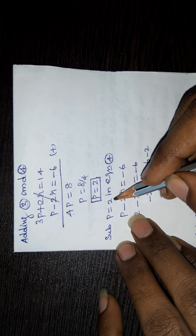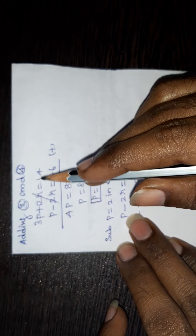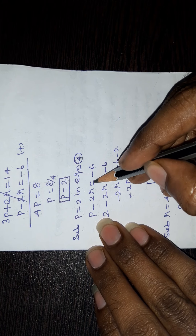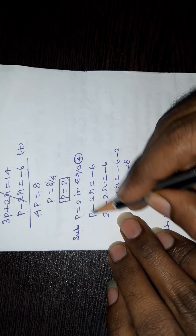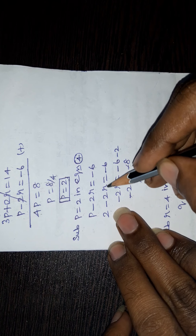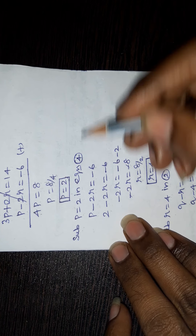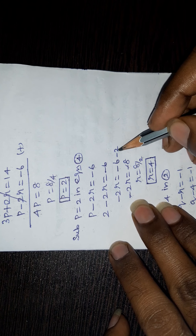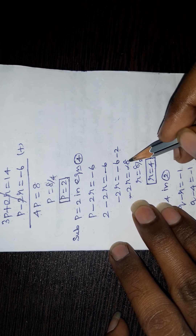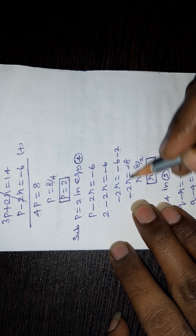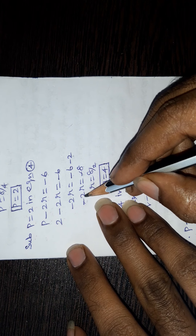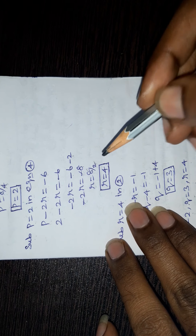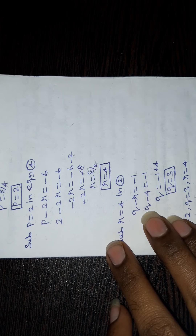Substitute p equal to 2 in equation 4. Equation 4 is p minus 2r equal to minus 6. So 2 minus 2r equal to minus 6. Moving 2 to the right side: minus 2r equal to minus 6 minus 2 equals minus 8. The negatives cancel, so 2r equal to 8, giving r equal to 4.